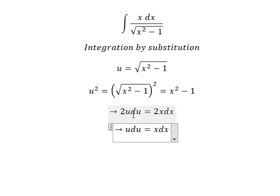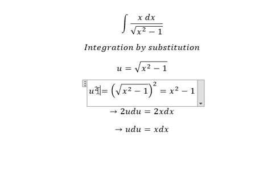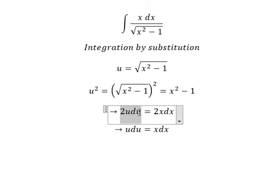So some people want to ask how can I get 2u du equal to 2x dx. Because we do the derivative of u square in here, you get 2u du.